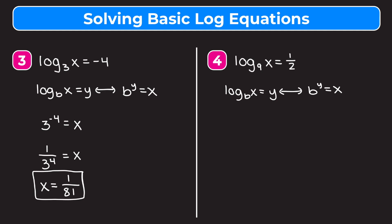Example 4 is log base 9 of x equals 1/2. We change this into exponential form: the base 9 is raised to the 1/2 power and set equal to x. Remember, raising something to the 1/2 is the same as taking the square root. So x equals the square root of 9, which is 3. Therefore x is equal to 3.